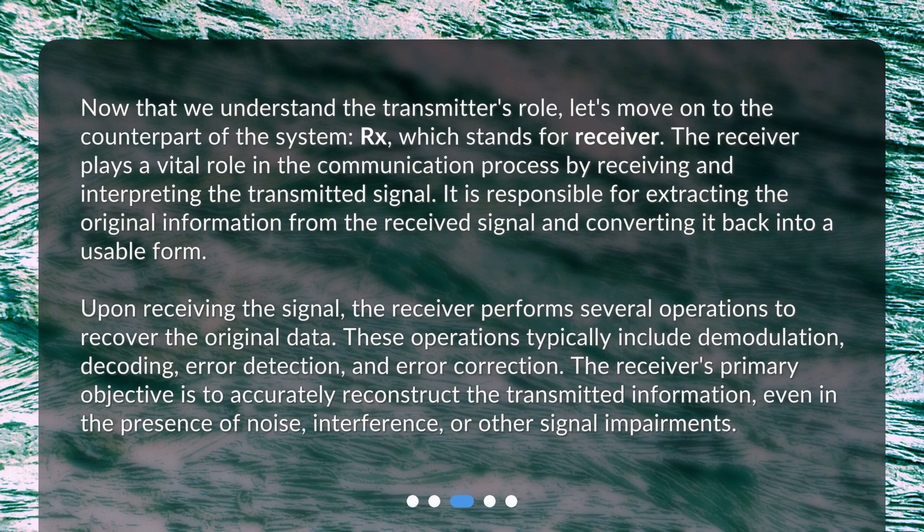What is Rx? Now that we understand the transmitter's role, let's move on to the counterpart of the system — Rx, which stands for receiver. The receiver plays a vital role in the communication process by receiving and interpreting the transmitted signal. It is responsible for extracting the original information from the received signal and converting it back into a usable form. Upon receiving the signal, the receiver performs several operations to recover the original data. These operations typically include demodulation, decoding, error detection, and error correction.